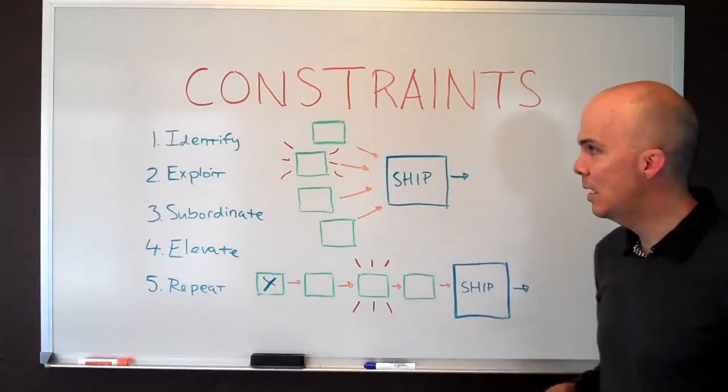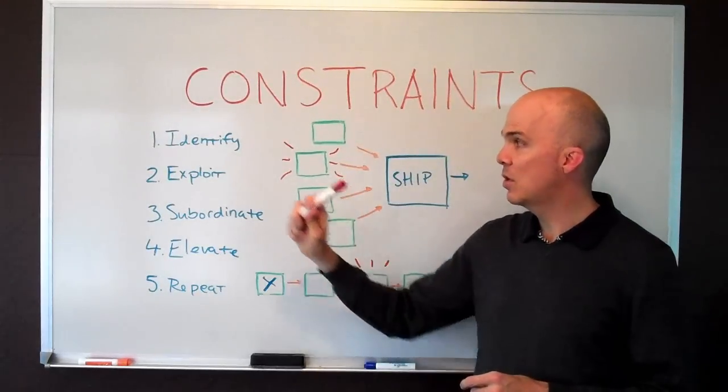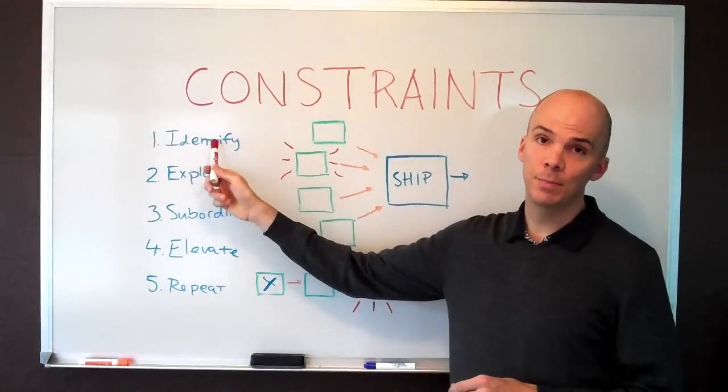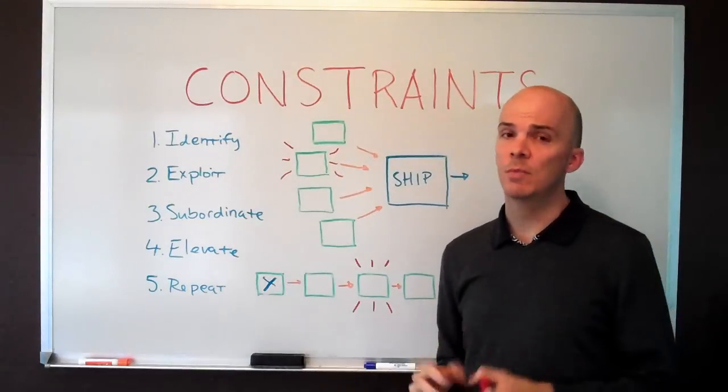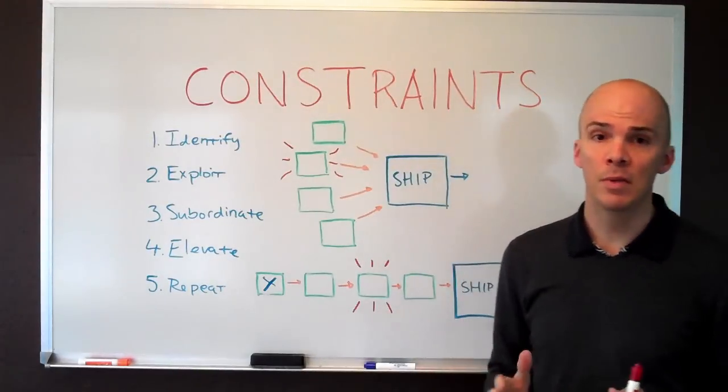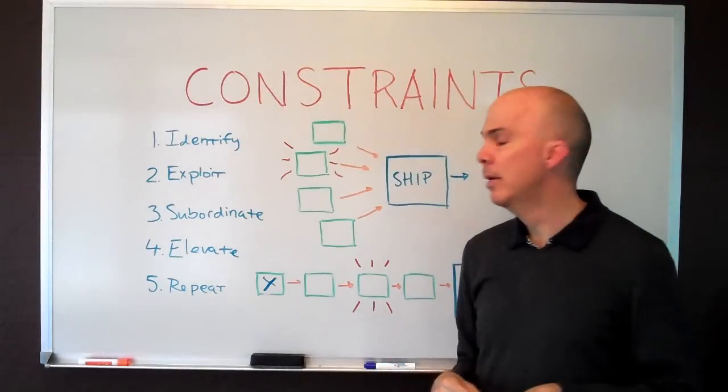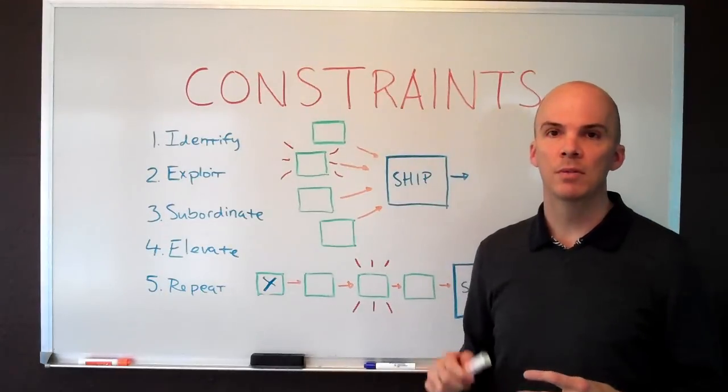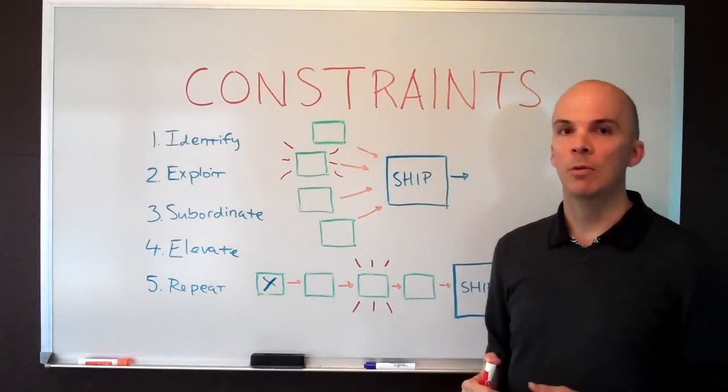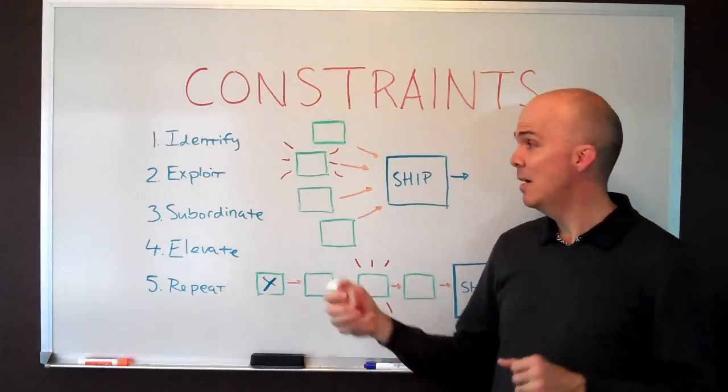So the idea is that you start with identifying the bottleneck first. And Goldratt says himself that if it's a service business, it's going to be a lot trickier than, say, a manufacturing plant, but it can be done. And so find that person, policy, process, machinery that is the problem and identify it.